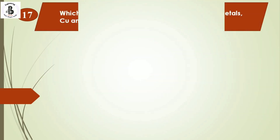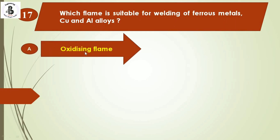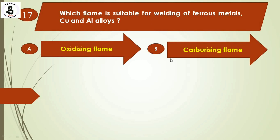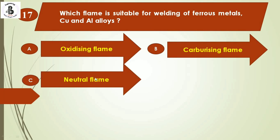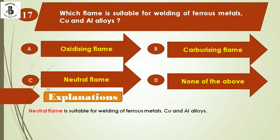The next question: which flame is suitable for welding of ferrous metals, copper, and aluminum alloys? Option A: oxidizing flame, Option B: carburizing flame, Option C: neutral flame, Option D: none of the above. The neutral flame is suitable for welding ferrous metals, copper, and aluminum alloys. The right answer is Option C.